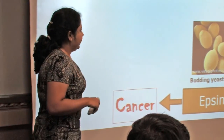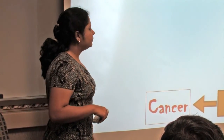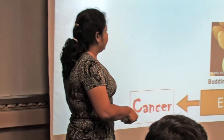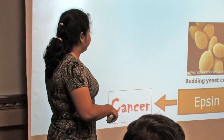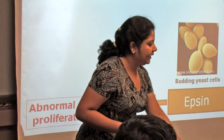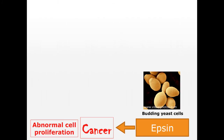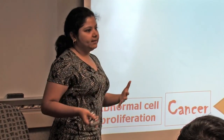What I will focus on today is the budding yeast cells. As we talked about, epsin is important for cancer, and one of the hallmarks of cancer is abnormal cell proliferation. So we are using budding yeast as a system to study this abnormal cell proliferation, and then we expand our work to mammalian cells.